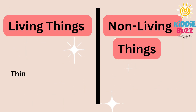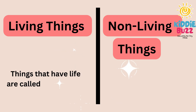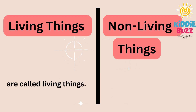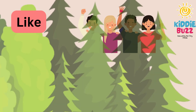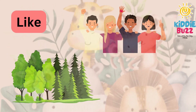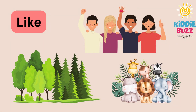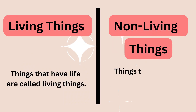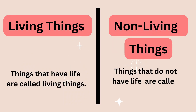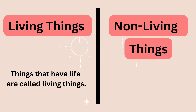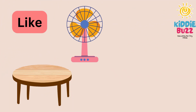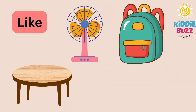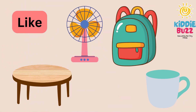Things that have life are called living things, like human beings, plants and trees, and animals. And things that do not have life are called non-living things, like table, pan, bag, and cup.